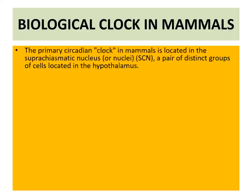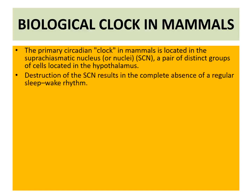Biological clocks in mammals: the primary circadian clock in mammals is located in the suprachiasmatic nuclei, also known as SCN — a pair of distinct groups of cells located in the hypothalamus of the brain. The destruction of SCN results in the complete absence of regular sleep-wake rhythm.